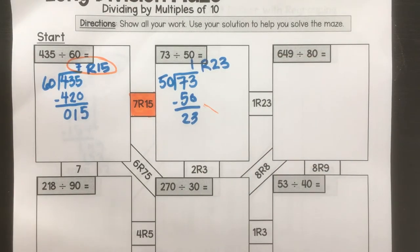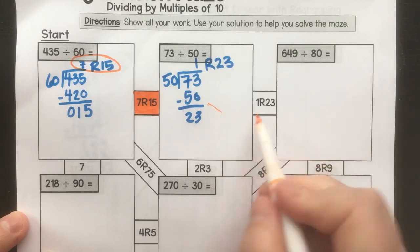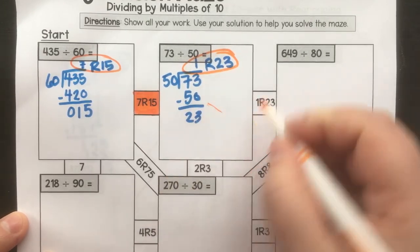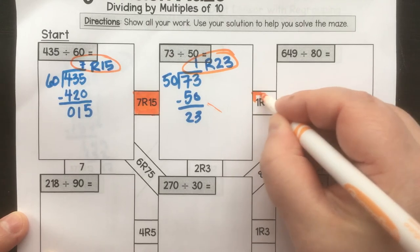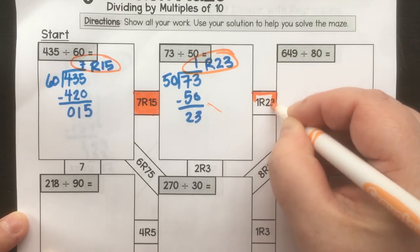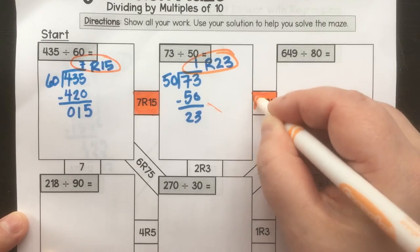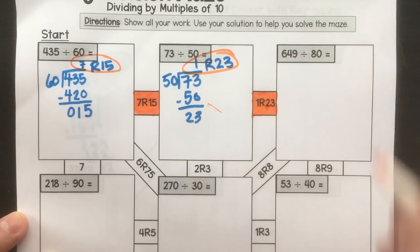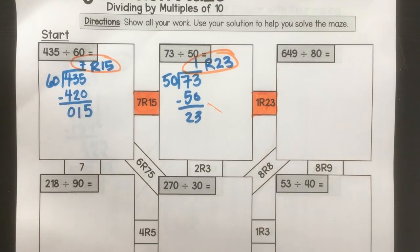And I look at my options. I have either one remainder 23 or two remainder 3. So I'm going to color in the correct answer. And that leads me to my next problem.